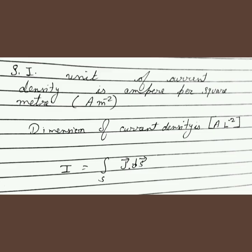Another important formula: current I equals the surface integral of current density, meaning I equals the integration of J vector dot dS vector. You have to remember this formula for numerical problems: I equals J vector dot dS vector in integral form.